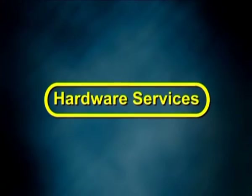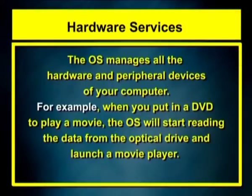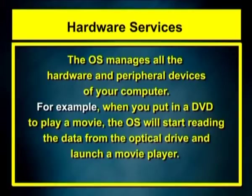While the operating system has a number of built-in security tools, you may need additional software to set up the best protection system. In particular, virus scanning software. These types of utilities expand the functionality of the operating system. Then number four, hardware services. The operating system manages all the hardware and peripheral devices of your computer. For example, when you put in a DVD to play a movie, the operating system will start reading the data from the optical drive and launch a movie player.